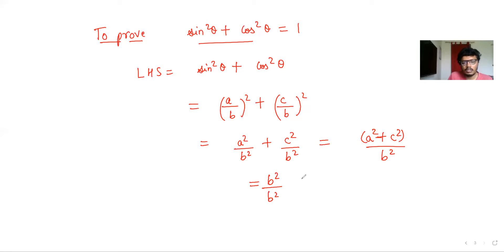So we get b²/b², which is 1, which is the right hand side, and hence we have proof of the identity.